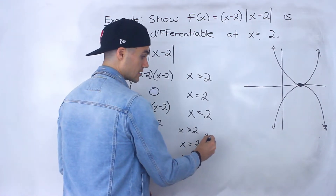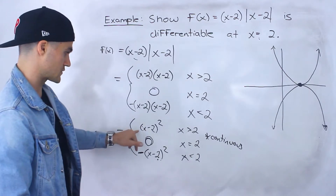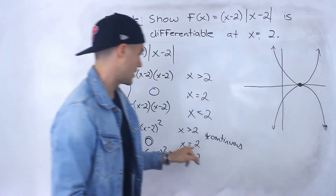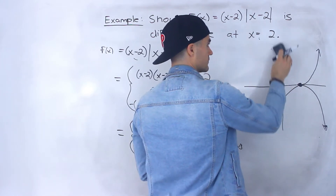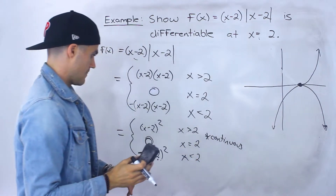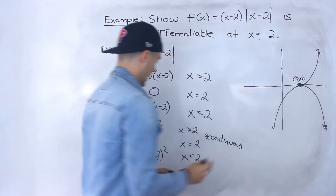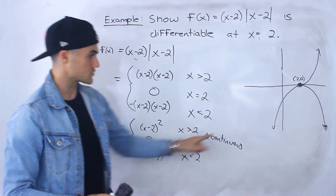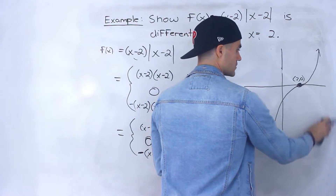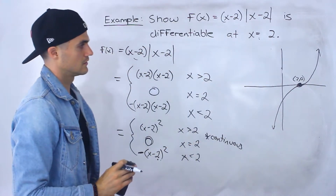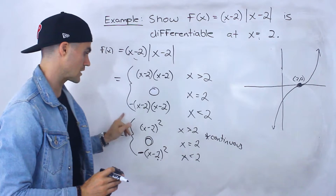So this is actually going to be a continuous piecewise function. Going back to the graph: it's x minus 2 squared but only when x is greater than 2, so all x values less than 2 we can erase. The coordinate at x equals 2 is the point 2 comma 0. And then it's negative x minus 2 squared but only when x is less than 2, so we erase all x values to the right. This function looks like that — that is the graph, and we got it from this piecewise function.